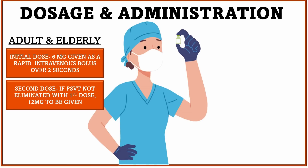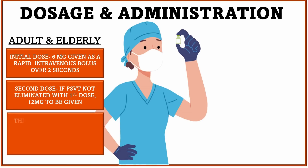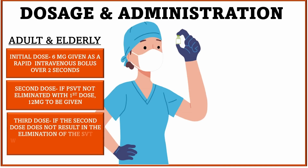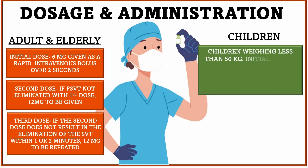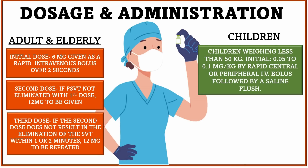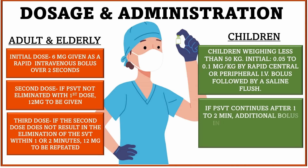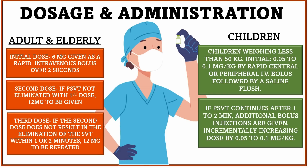If after the second dose the PSVT is still not reverted, then we administer 12 mg again. In the case of children weighing less than 50 kg, the initial dose is 0.05 to 0.1 mg per kg. If PSVT is not reverted, injections are given incrementally, increasing the dose by 0.05 to 0.1 mg per kg, continuing until PSVT converts to normal sinus rhythm or the patient reaches the maximum single dose. In children, the maximum single dose is 0.3 mg per kg.